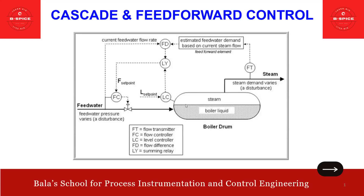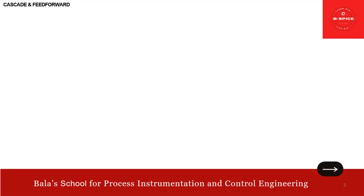If you think about Cascade and FeedForward, you can always think about this steam drum boiler control level control. As you can see here, we have the steam boiler drum, the level control, the feed water flow control, and also the steam outlet stream leaving the drum flow. This is the three-element level control strategy.